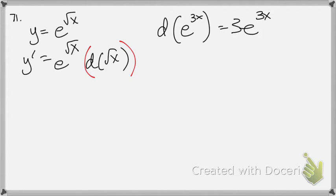But I still need to figure out what is that derivative right there. Okay, well, what is the derivative of the square root of x? It's 1 over 2 root x. It's a power rule.